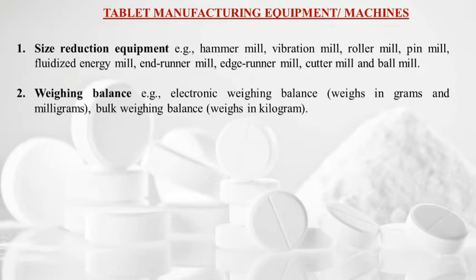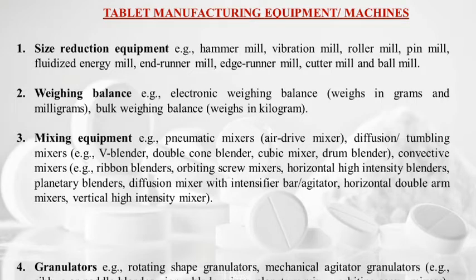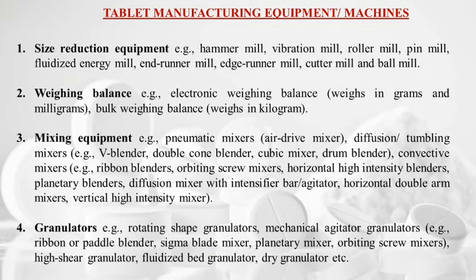Mixing equipment includes pneumatic mixers, air drive mixers, diffusion or tumbling mixers like V blender, double cone blender, cubic mixer, drum blender; convective mixers like ribbon blender, orbiting screw mixer, horizontal high intensity blenders, planetary blenders, diffusion mixer with intensifier bar, horizontal double arm mixer, and vertical high intensity mixers. Granulators include rotating shape granulators and mechanical agitator granulators.